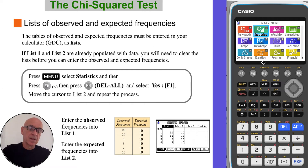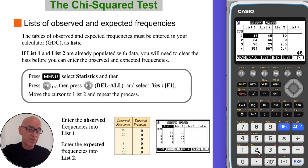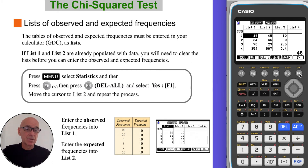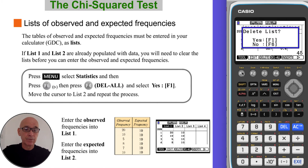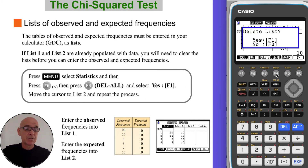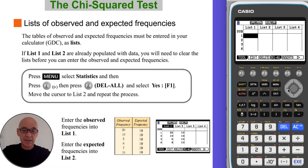On your calculator, press menu, then statistics option 2, and you'll see the lists menu. If the lists are already populated you'll need to clear them. Press F6 followed by F4 to delete all and confirm with yes. Then move the cursor to another list and repeat the process — F4 delete all and confirm with F1.